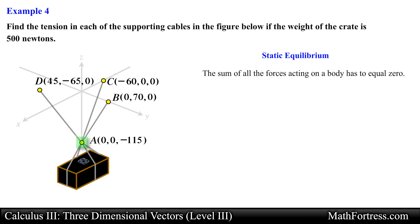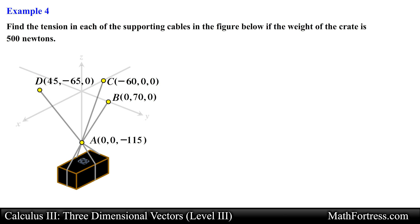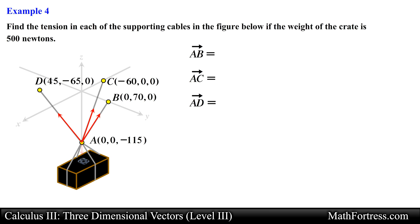The first step is to find an expression for each of the forces acting on point A. This includes 3 tension forces — one for each rope — and the weight of the box. Let's label 3 separate vectors using the points provided. These forces represent the tension along point A to point B, along point A to point C, and along point A to point D. Next we write the component form for each vector by subtracting point A from each of the other points.